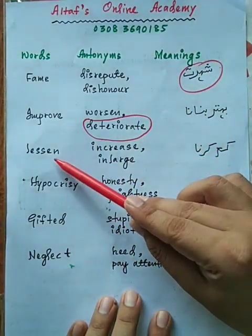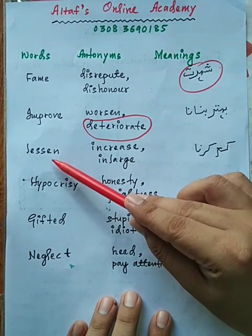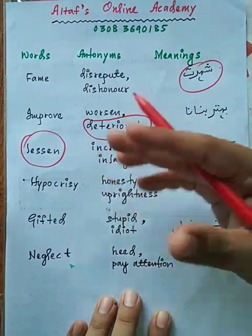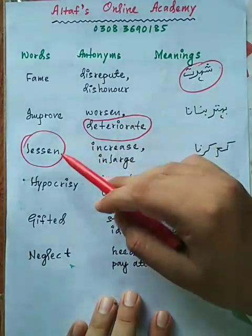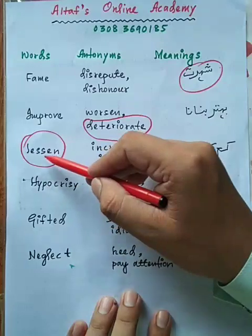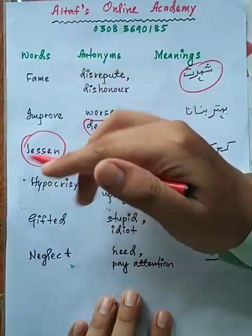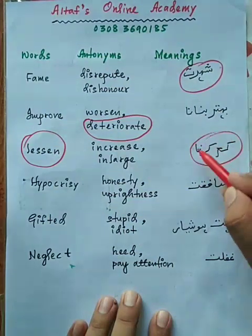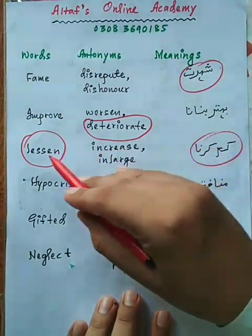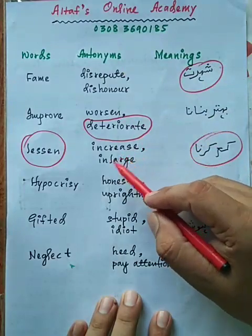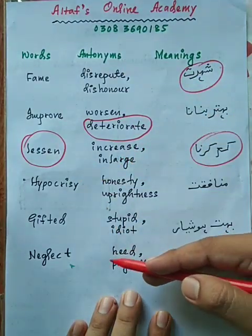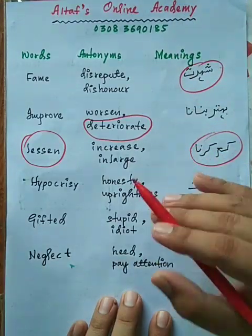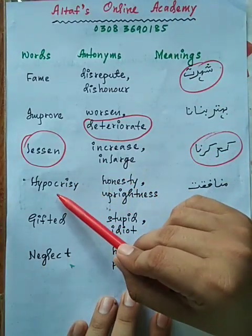Teesra word hai 'lessen'. Lessen — L-E-double S-E-N — ka matlab hota hai 'sabak', lekin yahan verb ke roop mein 'come karna', kisi cheez ko ghataana. Iska jo antonym ya opposite meaning word hoga — hum ek cheez ko ghata rahe hain, to opposite kya hoga? 'Increase', yani badhaana, ya 'enlarge', yani mazeed badha karna.